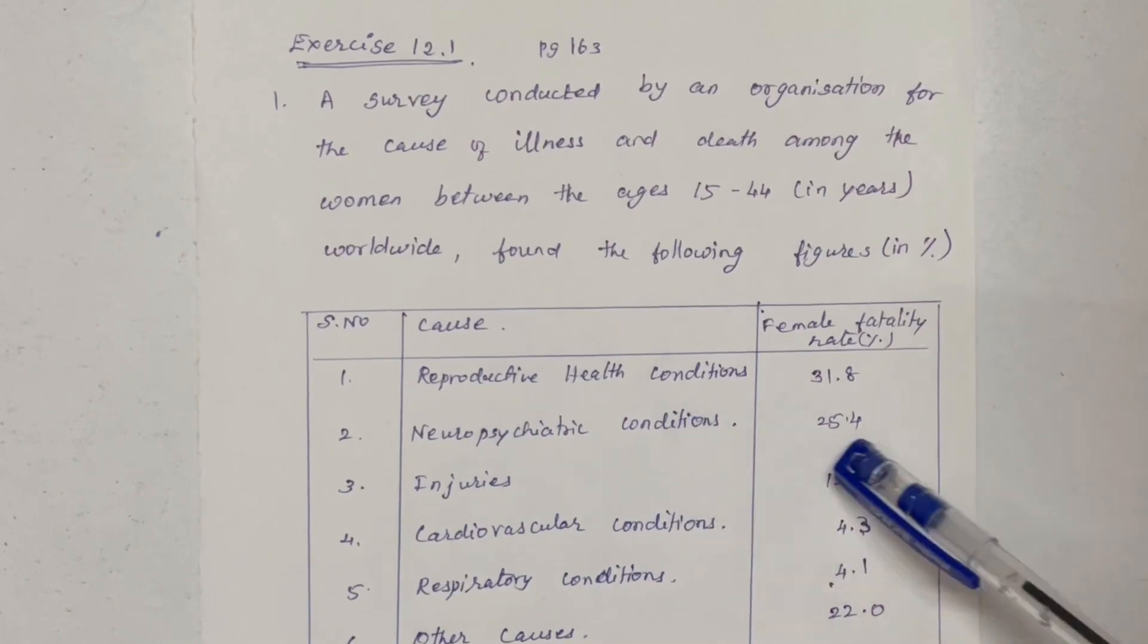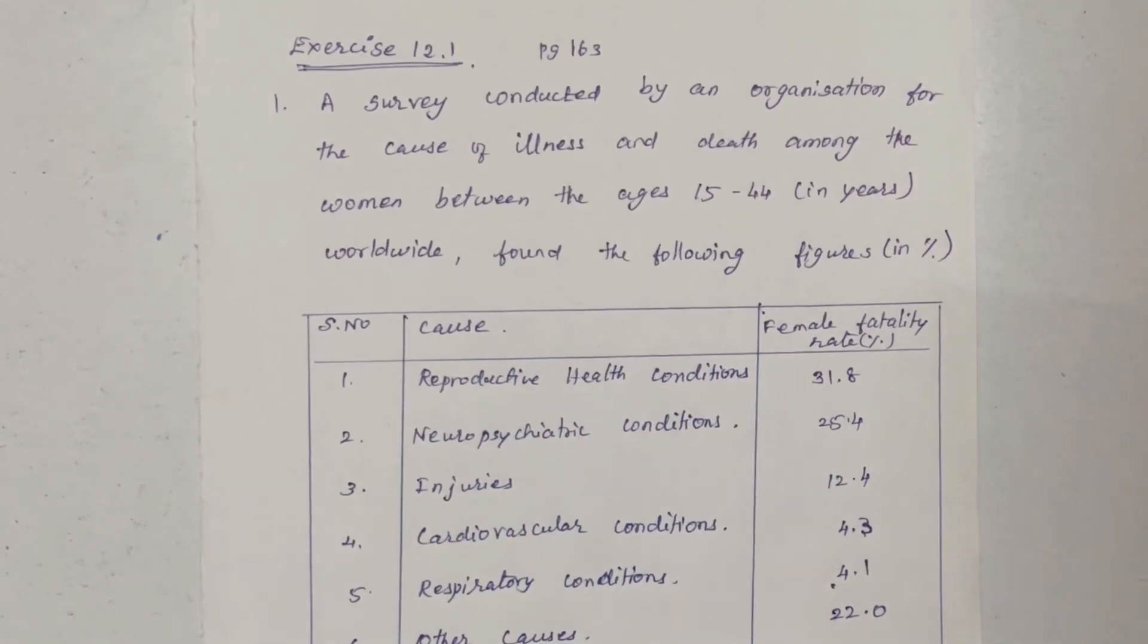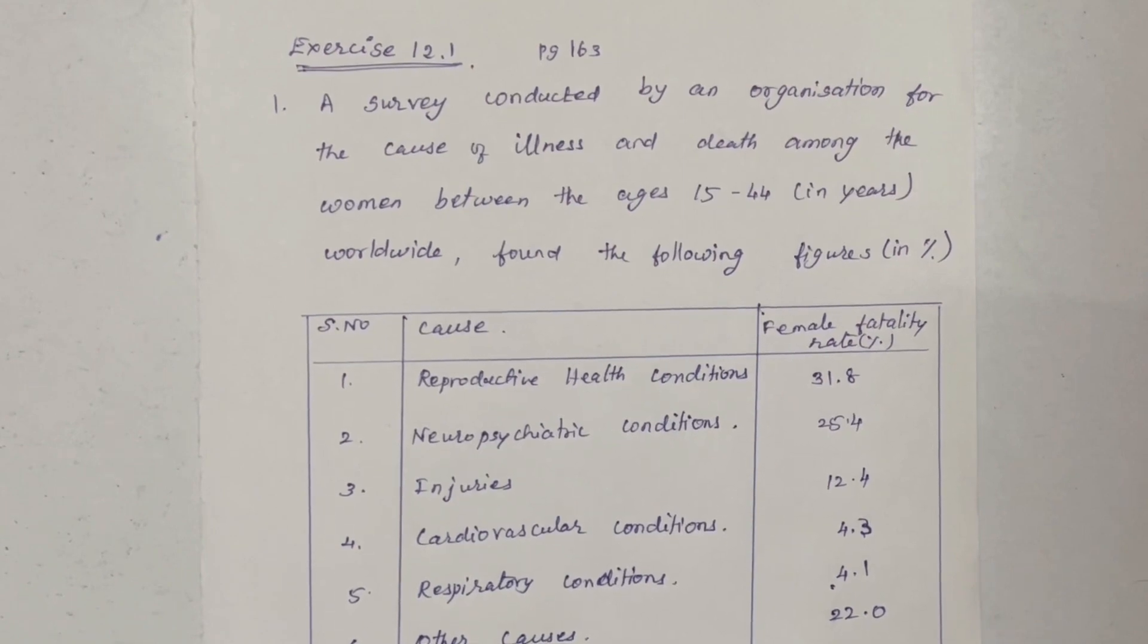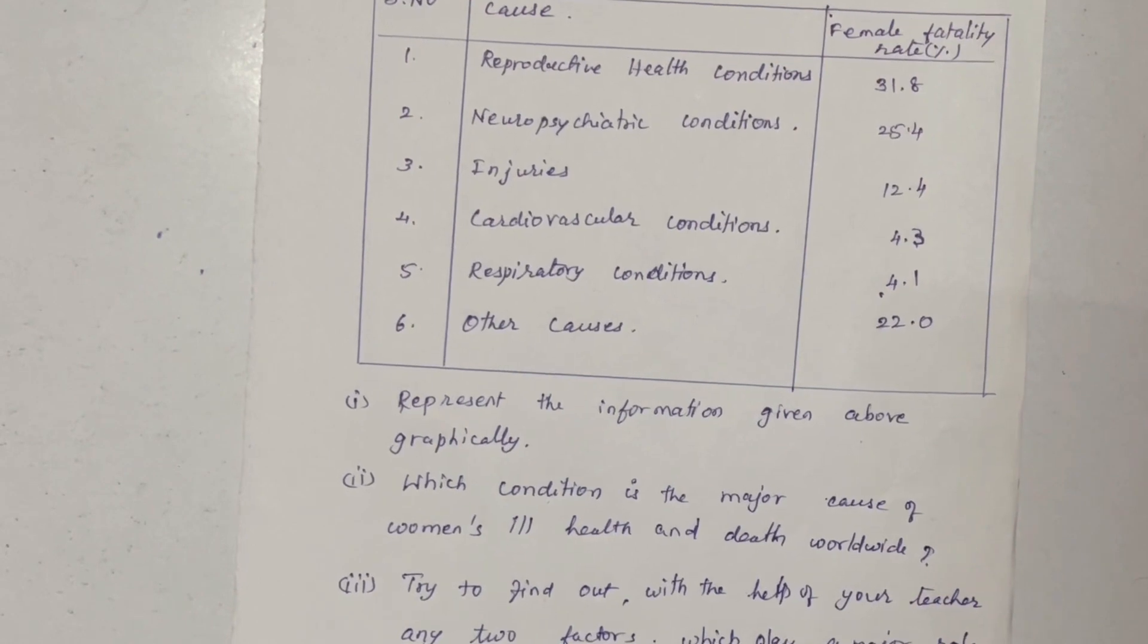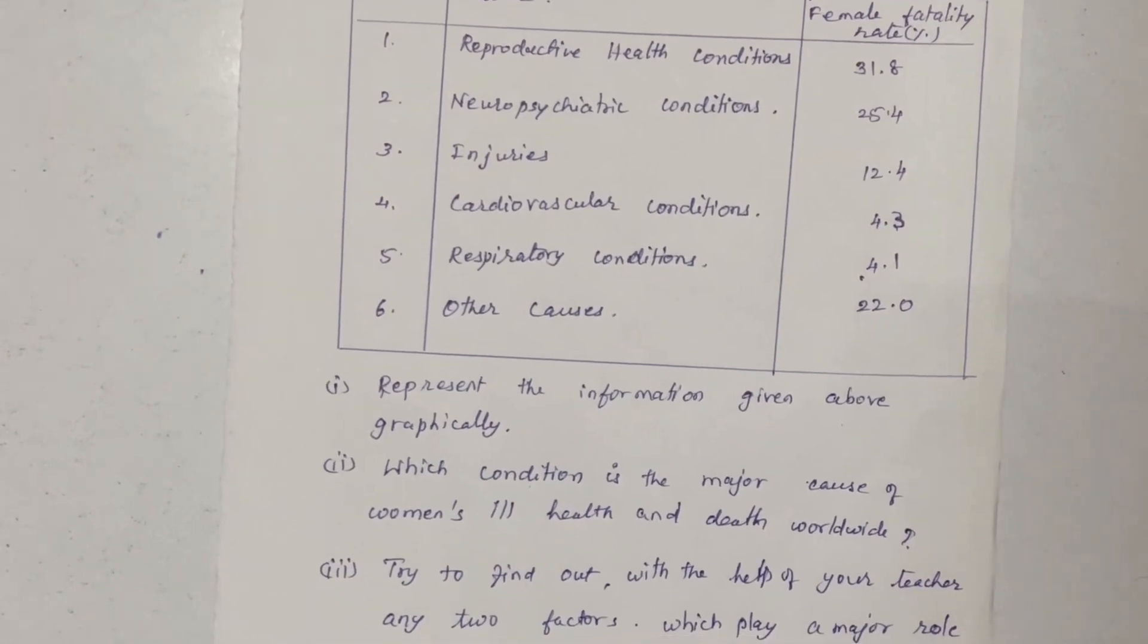Reproductive health condition 31.8%, neuropsychiatric condition 25.4%, injuries 12.4%, cardiovascular conditions 4.3%, respiratory conditions 4.1%, other causes 22.0%. This is given above graphically.